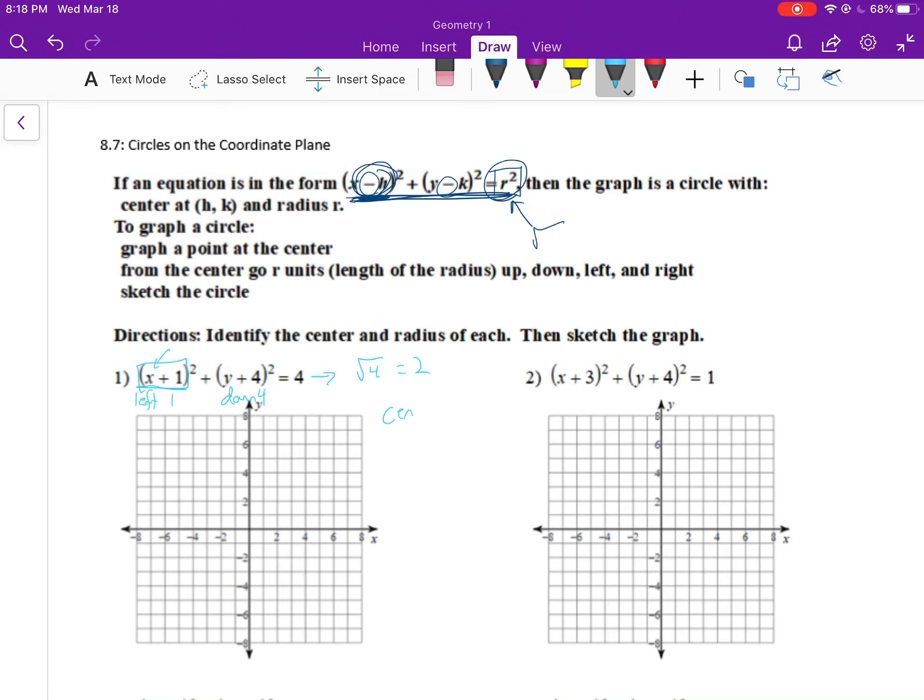So the center is going to be at (-1, -4) and the radius is two. So we go negative one, negative four. There's the center. And from the center, we're going to go right two, up two, left two, and down two. And we're going to draw our circle.